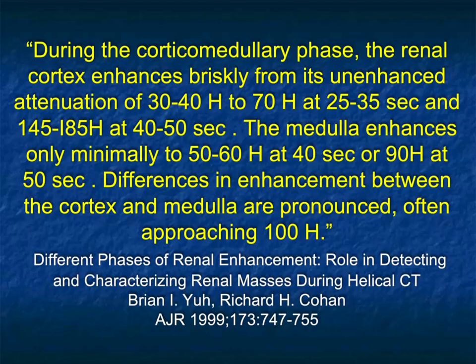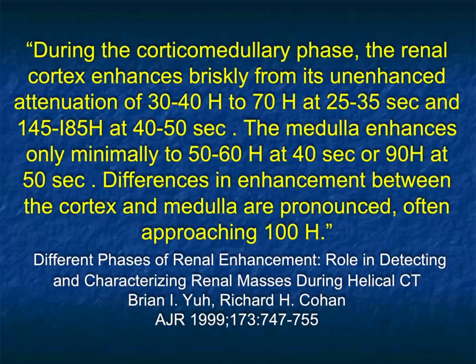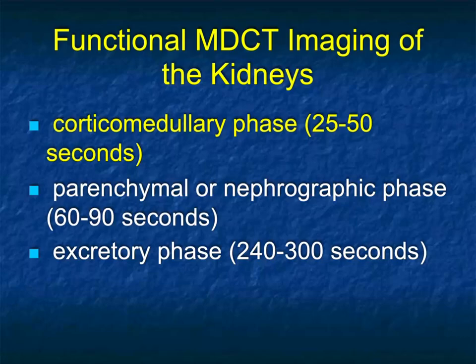This article goes back more than 25 years, from the early spiral CT days, discussing how the cortical medullary interface looked. There was a significant difference between arterial phase imaging in the cortex and medulla: enhancement goes from about 30–40 Hounsfield units up to 70 HU at about 30 seconds and about 150 HU at 50 seconds, with the medulla enhancing minimally — only about 50–60 HU at 40 seconds and 90 HU at 50 seconds.